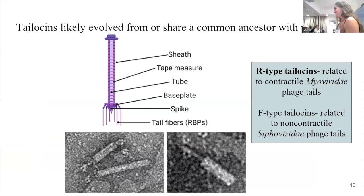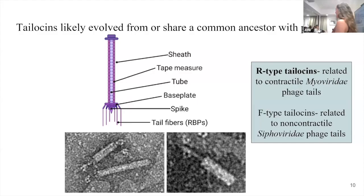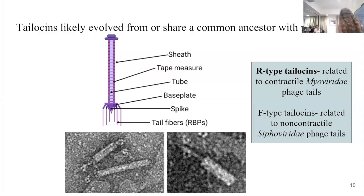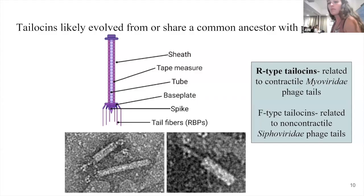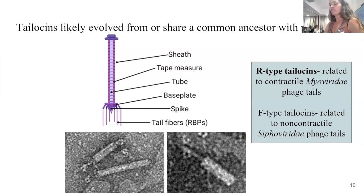So we wondered: what is a talosin? In the literature, talosins are said to have likely evolved from phage, or share a common ancestor with phage. Talosins look like this in their cartoon form — a tube shape with tail fibers at the end, which are the receptor binding proteins. There are two different types of talosins. Ours seem to be an R-type talosin, which are more related to contractile myoviridae phages than siphoviridae.